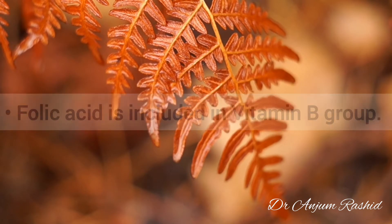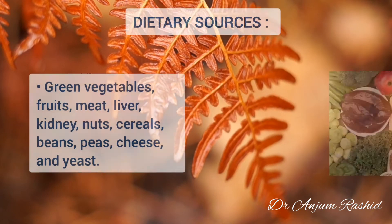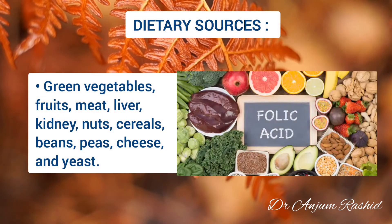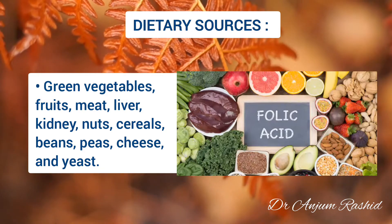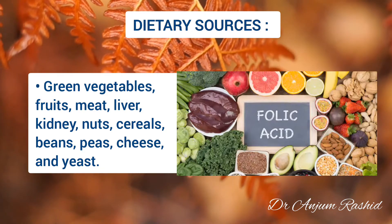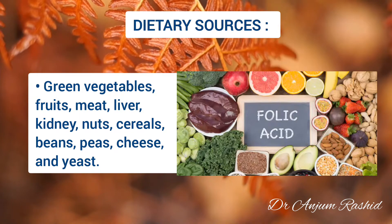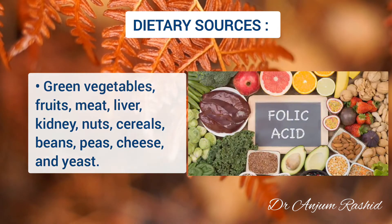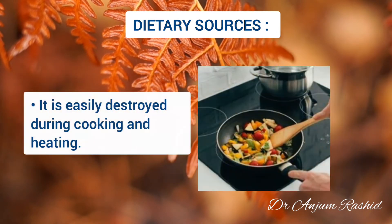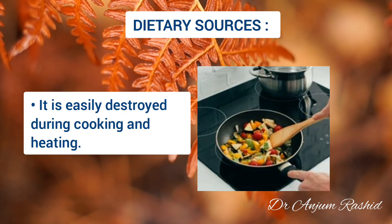Dietary sources of folic acid include green vegetables, fruits, meat, liver, kidney, nuts, cereals, beans, peas, cheese, and yeast. Folic acid is easily destroyed during cooking and heating.